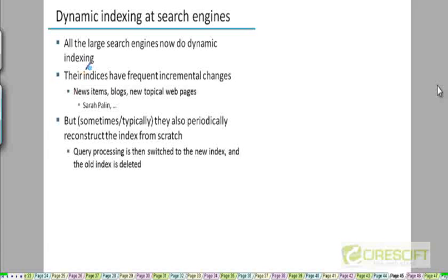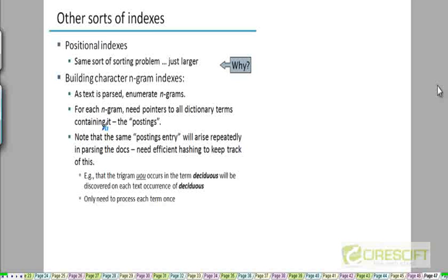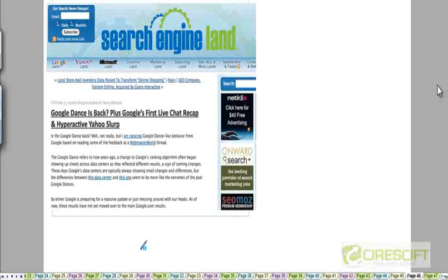Most of the large search engines do dynamic indexing because documents on the web keep on changing. But sometimes what happens is they periodically reconstruct the entire index from scratch. Usually that's done on an entirely separate set of machines. Once a new, brand new merged index is constructed, they will suddenly switch the query processing to that new index. I'll stop here, but basically we've completed this chapter. I'll just drop the last two slides because these are just trivial slides.